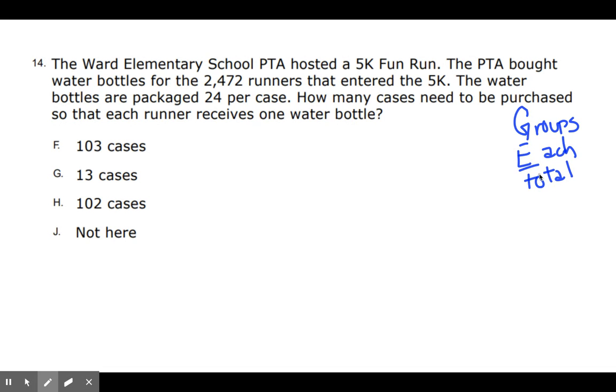So we're going to do the GET strategy here. With the GET strategy, I'm looking at groups, each, and total. Now the thing I want you to remember is that total is the main one. If we don't have the total, then we're going to be multiplying to find the total. If we do have the total, then we'll be dividing that total into groups. Do I have the total number of runners? I do. It's 2,472. So that means I'm going to be dividing. So I take my 2,472 and I'm going to group up. So I write this into a long division problem, just like so.